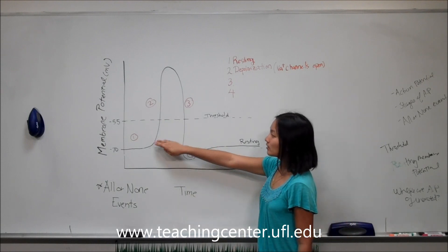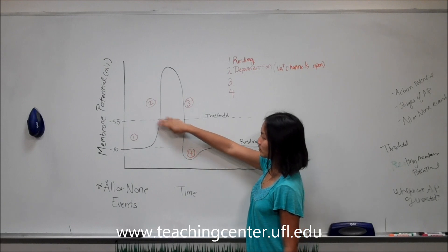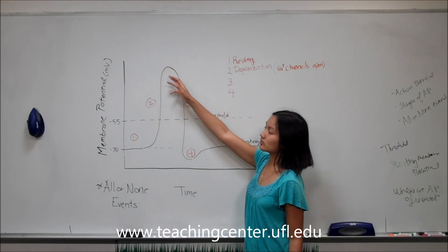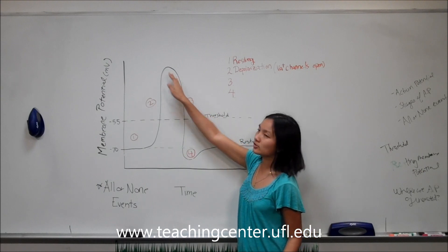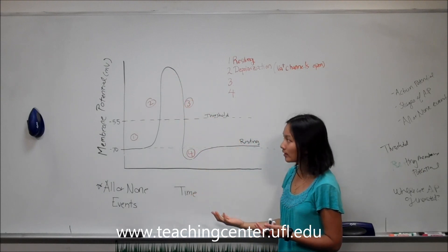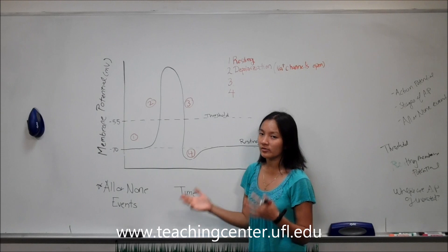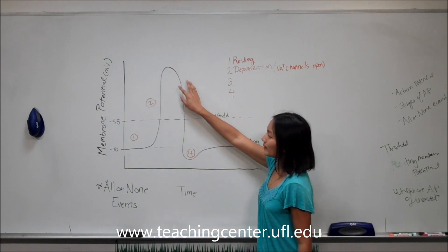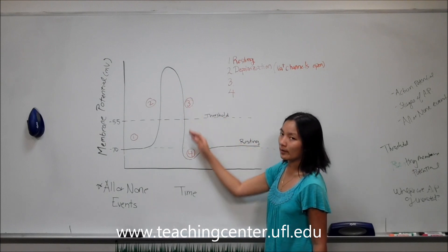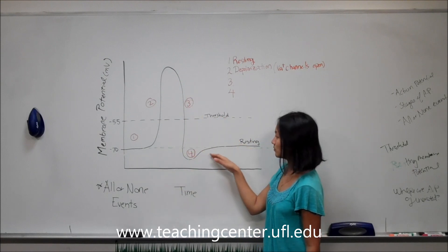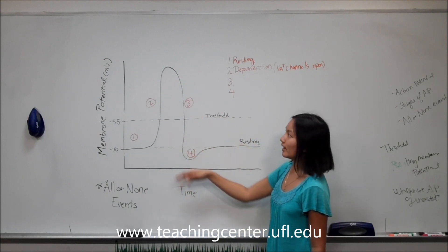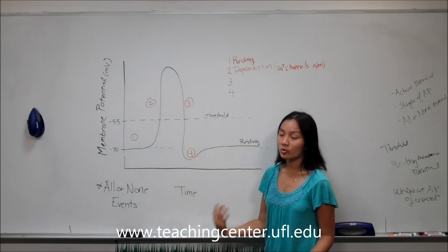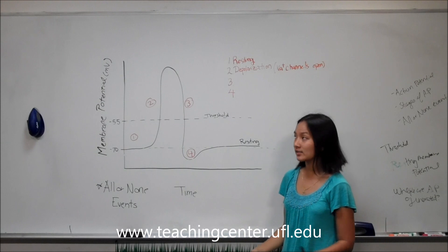So you hit stage two depolarization, action potential occurs, and it eventually peaks at a certain value. Now, when it peaks, your sodium channels are going to close, and your potassium channels will open around then. And then your membrane potential will slowly be brought back down, hoping to achieve this resting potential. So as your membrane potential starts to decrease or become more negative, this is known as repolarization.